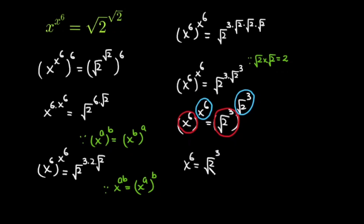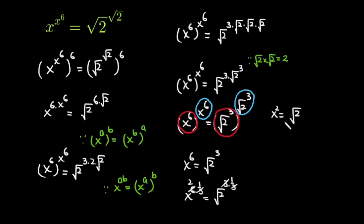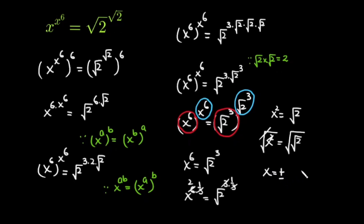Now taking the cube root on both sides. So this equation is x raised to the power 6 times 1 over 3, is equal to 2 under root raised to the power 3 times 1 over 3. This 3 cancels with 3, and 3 times 2 is 6, so this is x raised to the power 2 is equal to 2 under root. Now taking the square root on both sides, so x raised to the power 2 square root is equal to square root of 2 under root. This square and this square root will cancel, so this is further equal to x is equal to plus minus 2 under root.